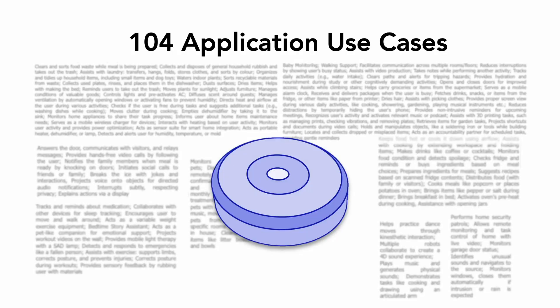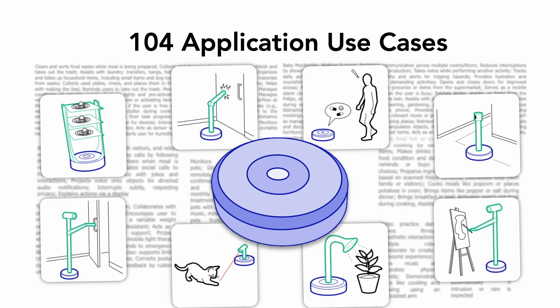Our thematic analysis contributes over 100 unique use cases for domestic cleaning robots, organized into eight themes: home maintenance, personal assistance, health, food preparation, communication, pet care, security, and entertainment.